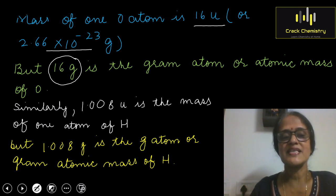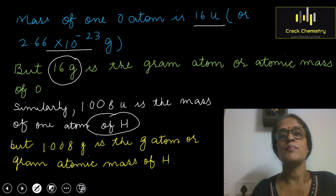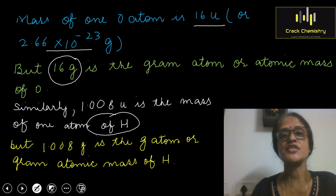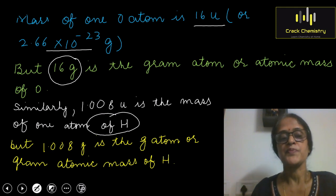Similarly, 1.008 U is the mass of one hydrogen atom, but if the same quantity is expressed in grams, it represents the Gram Atom or Gram Atomic Mass of hydrogen.